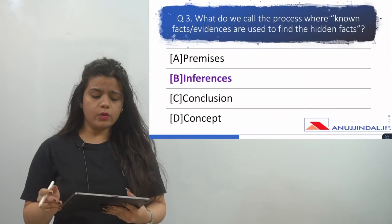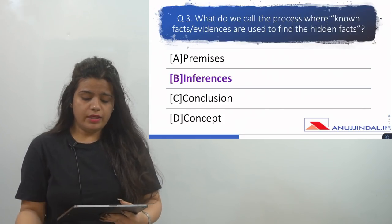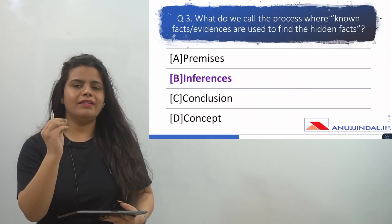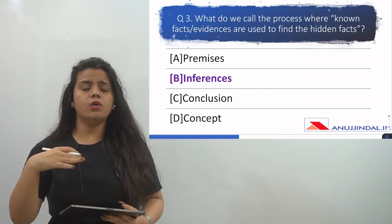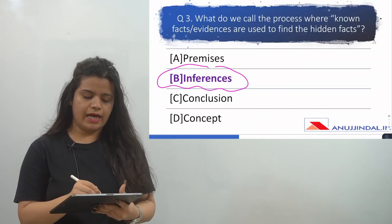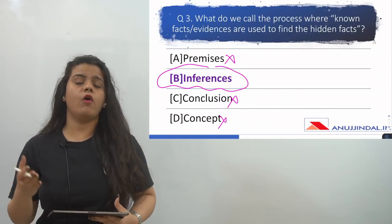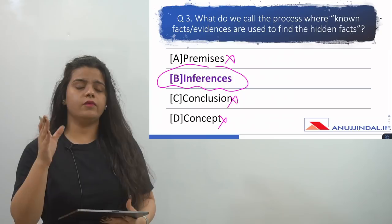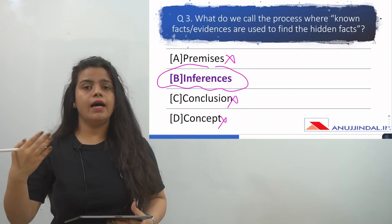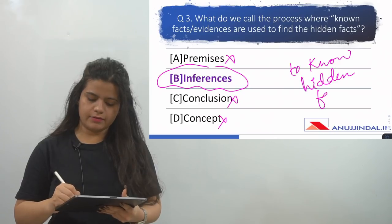Now the third question is: what do we call the process where known facts and evidences are used to find the hidden facts? The question asks: what are the facts called which are used to know the unknown facts? They are called inferences — it can't be premises, it can't be conclusion, and it can't be a concept. Inferences is a very basic point in research methodology definitions, and you must know its meaning: the facts you use to find the hidden or unknown facts are called inferences.